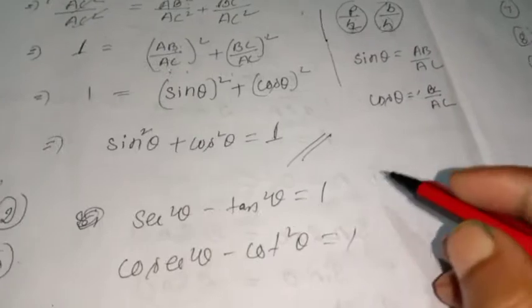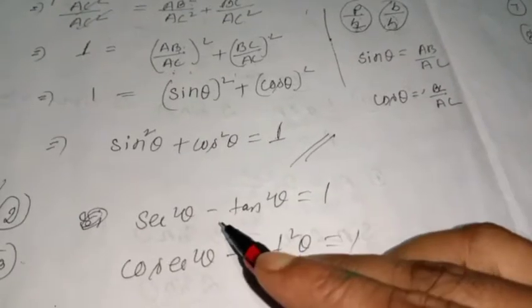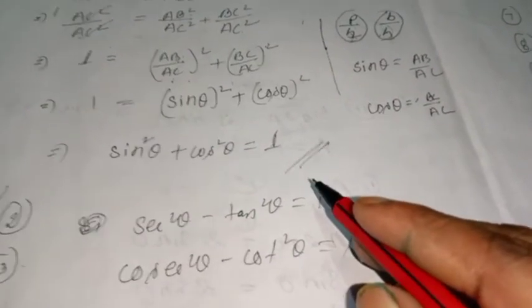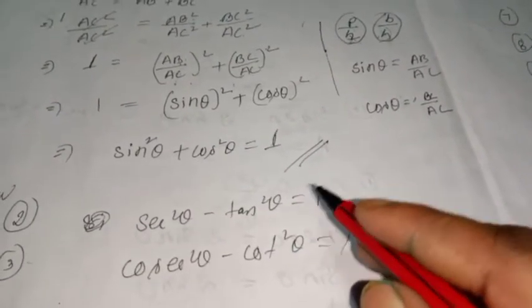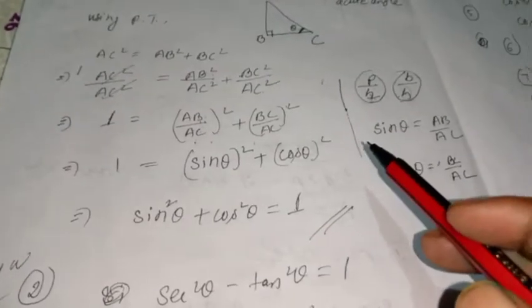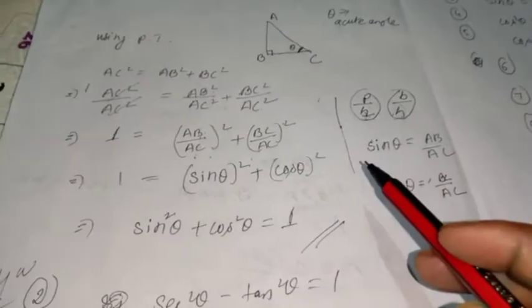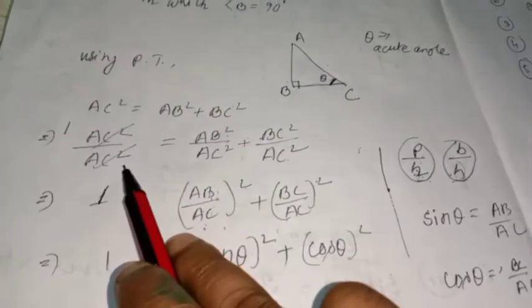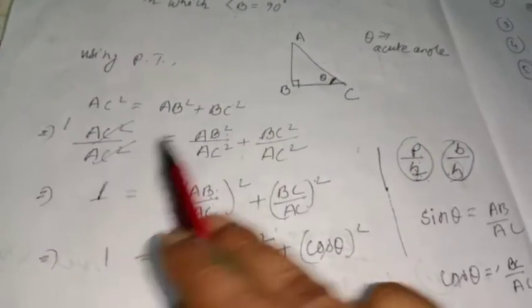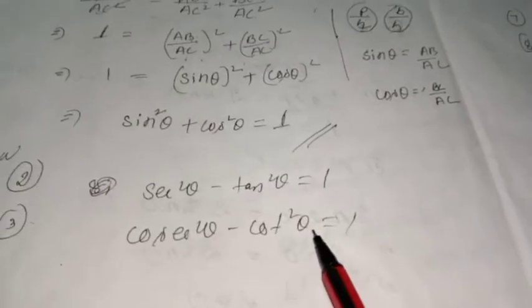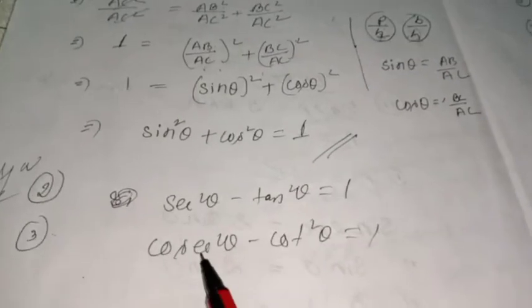To prove identity 2, first find the ratio of sec θ (hypotenuse/base) and tan θ (perpendicular/base) — both have base as denominator, so divide each term by base squared. For identity 3 similarly divide by the appropriate term. These two proofs are your homework.